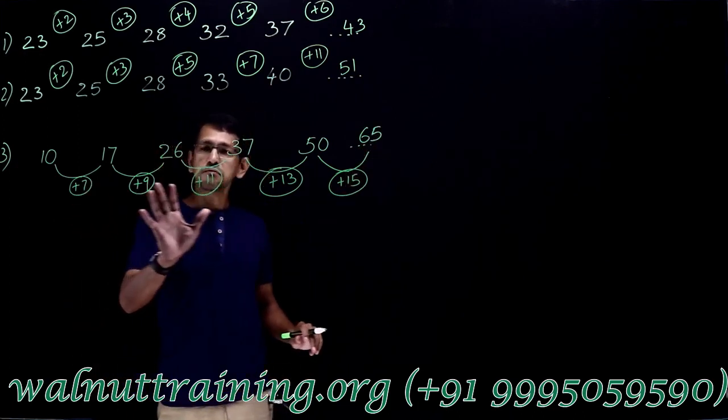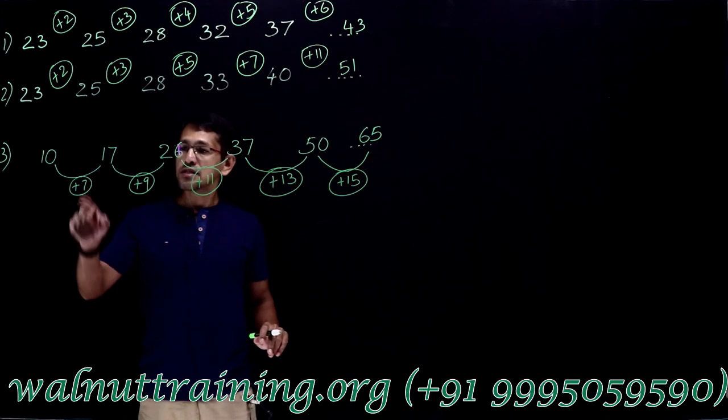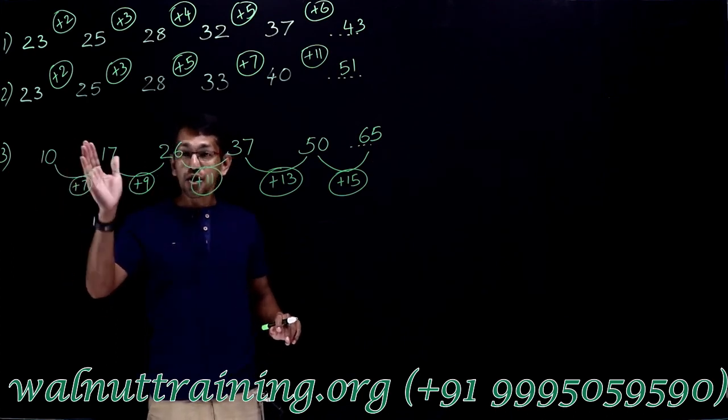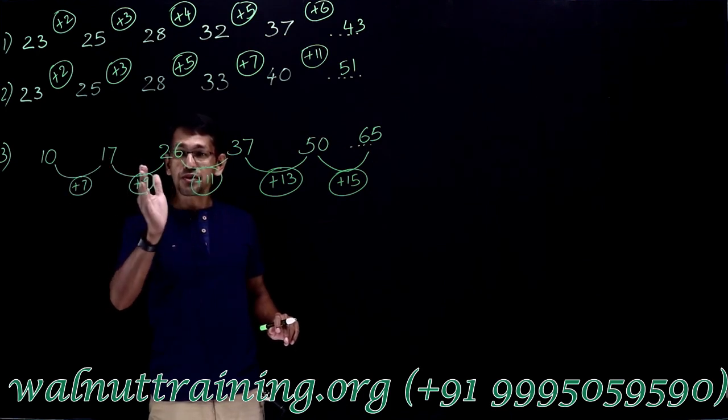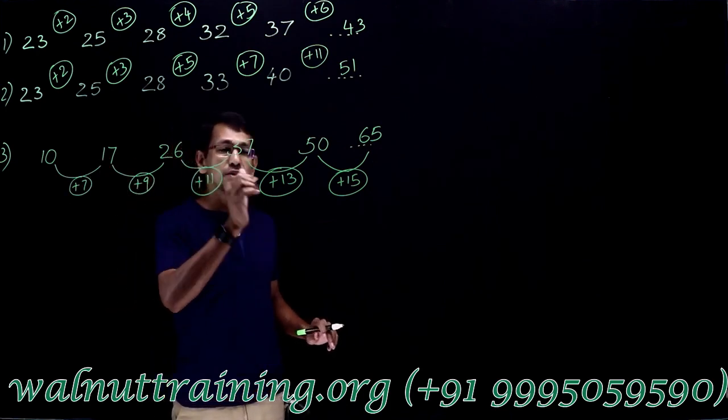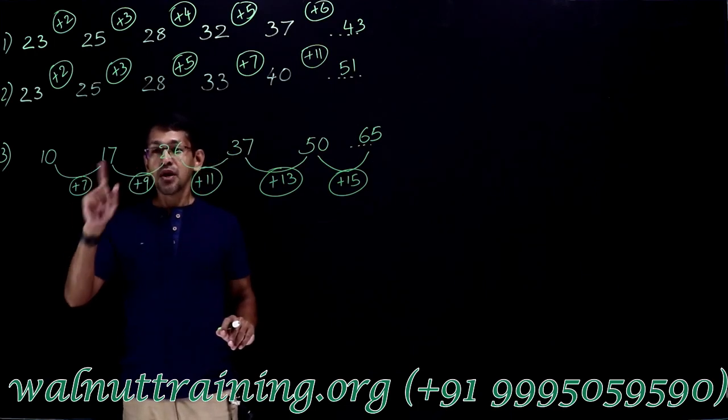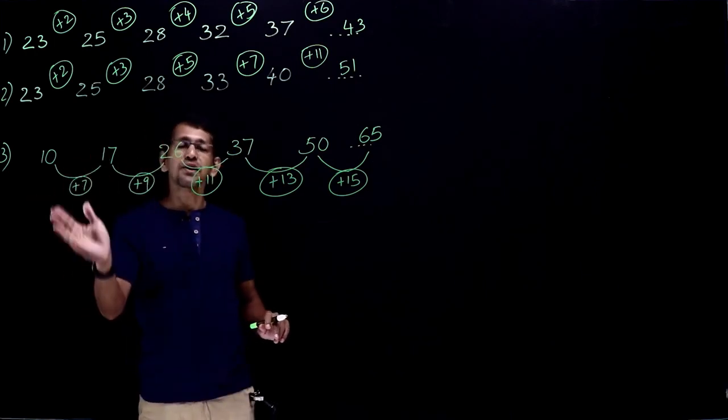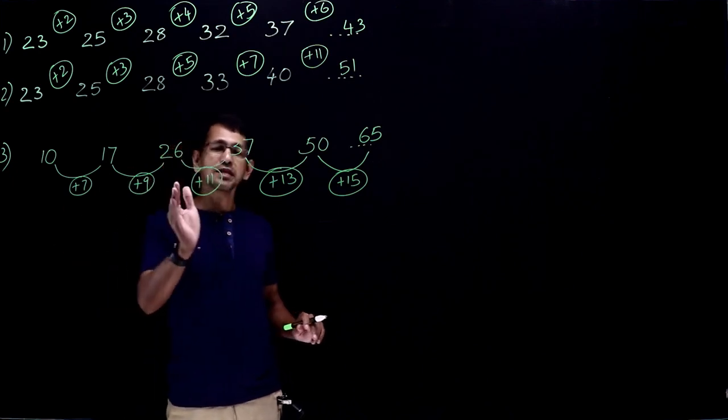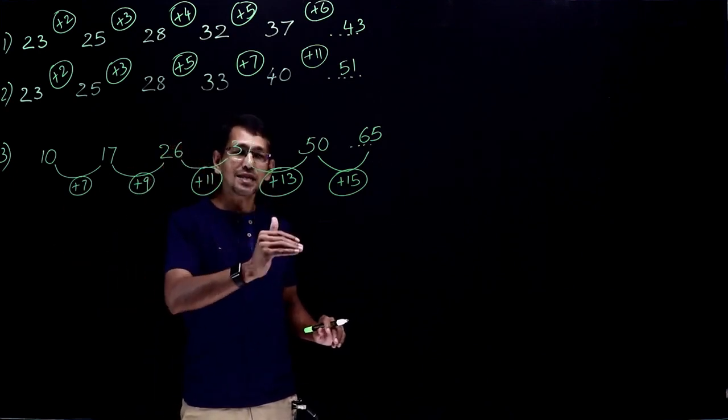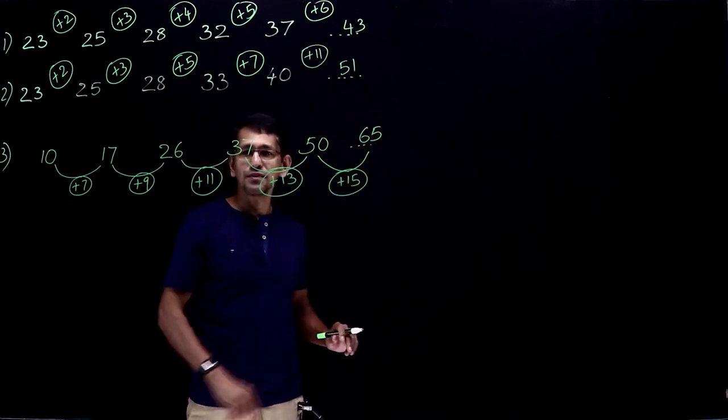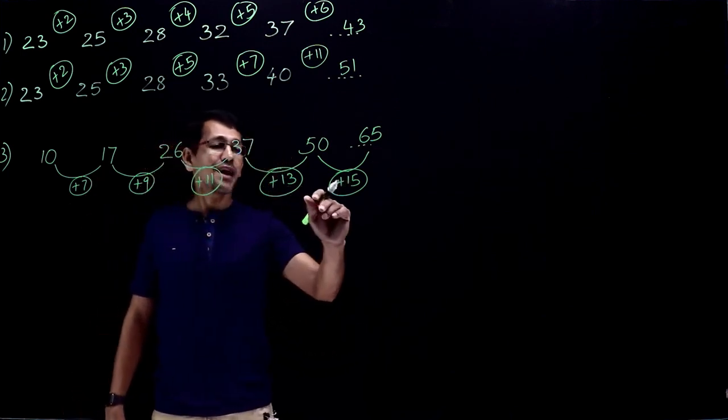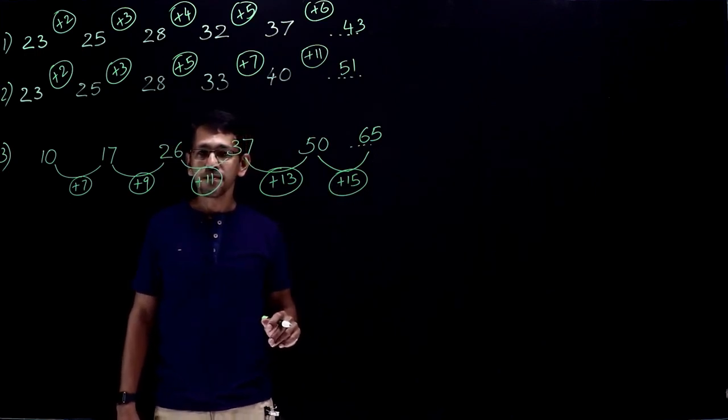This question, this method is perfectly alright. However, sometimes you may have 3-digit numbers over here. In that case, it is a bit difficult for us to find the difference between those 3-digit numbers at that point of time. So, we have to look at this question in a slightly different way. Do we have a better method? Do we have a better, less time consuming method to get the answer for this question without doing these differences?